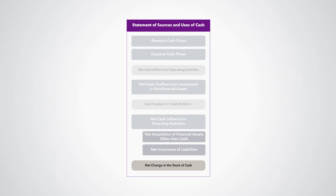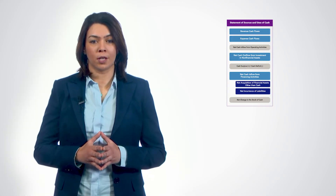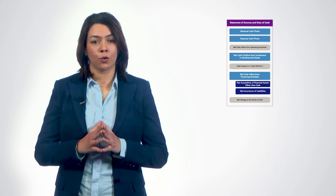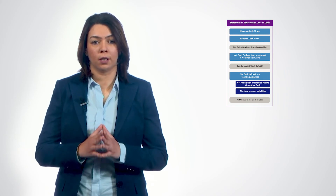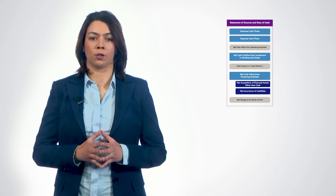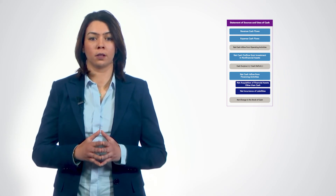The net change in the stock of cash is calculated as the cash surplus/deficit plus the net cash inflow from financing activities. This measure shows the change in the cash balances of the government during a given period.